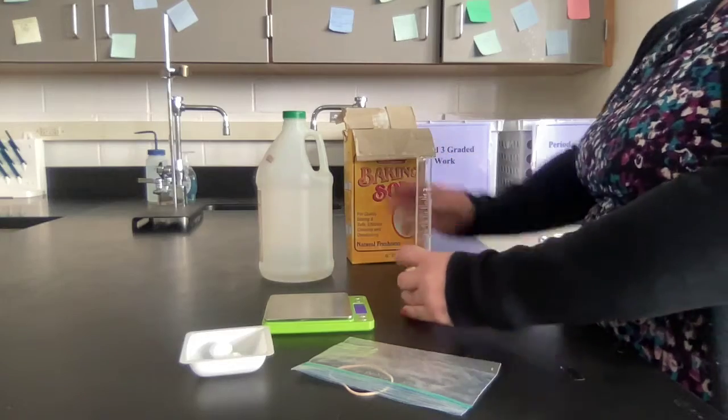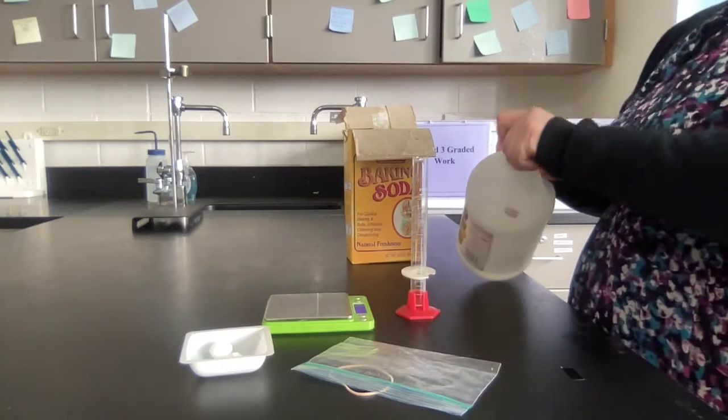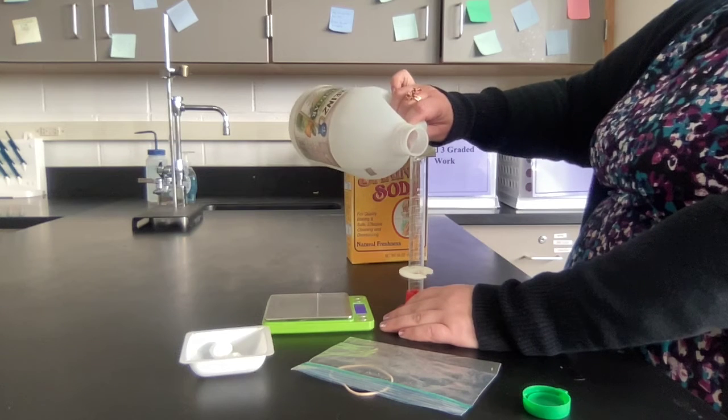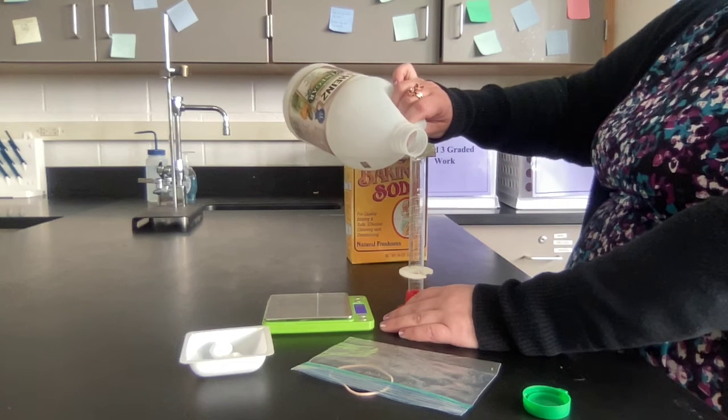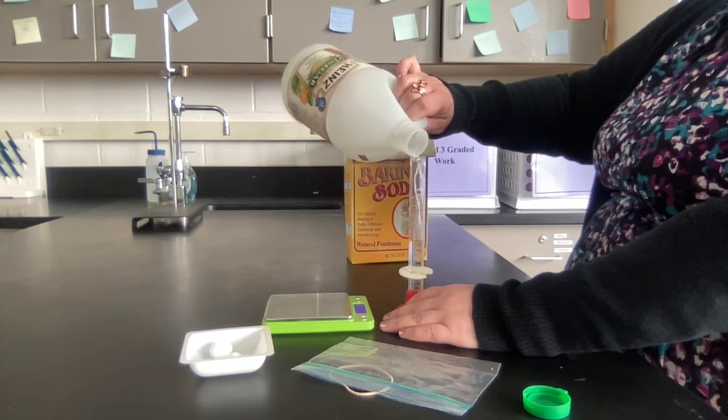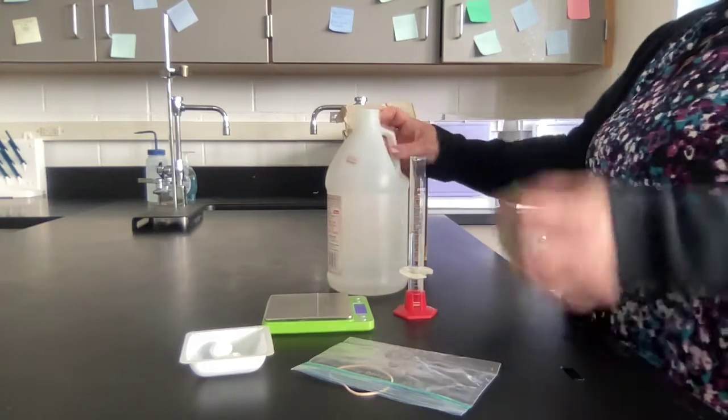Next thing you're going to do is take your graduated cylinder with your vinegar and measure out the correct amount of vinegar. And again, you'll have an amount, you'll be precise.